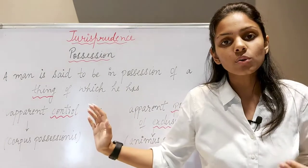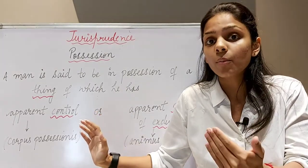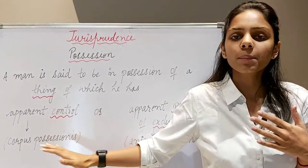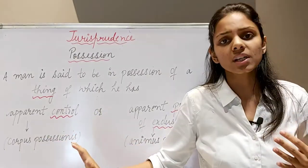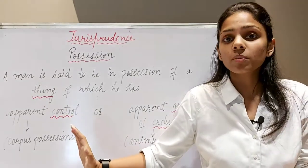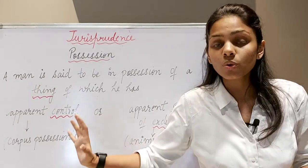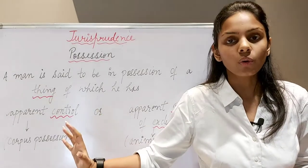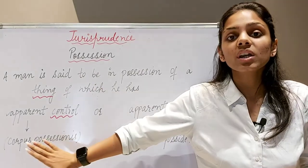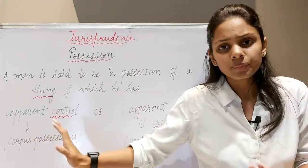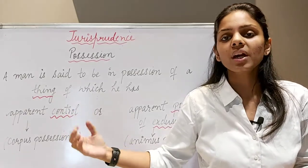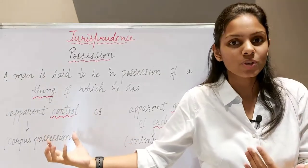Aur woh jo cheez hogi, us ki against hamara ek right in rem hoga — right against world at large hoga. Simple se baat hai ki agar ye whiteboard meri possession mein hai, matlab hi meri custody mein hai, meri care aur meri protection ke under hai. Aur possession mein woh kab hogi? Jab mere paas iska true actual physical control hoga. Woh kaise pata lagega? I stand in certain physical relationship and contact with this board — isi liye I say ki meri iske pe possession hai. So apparent control ka matlab: there must be some physical contact of a man and an object.